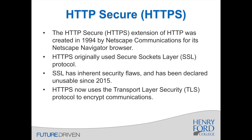HTTPS was created in 1994 by Netscape Communications for the Navigator browser. It originally used SSL, or Secure Sockets Layer, to encrypt connections. However, SSL has always had inherent security flaws — starting with version 1.0, which was never even released for public use because it was so bad. SSL 2.0 was deemed unusable, and by 2015, SSL 3.0 was also deemed unusable. Fortunately, by that point, we already had Transport Layer Security, which is the new protocol being used to encrypt all communications over HTTPS.